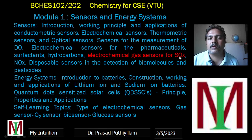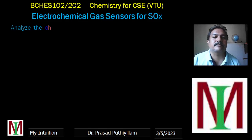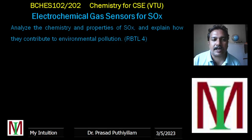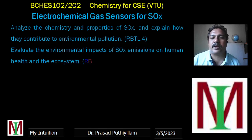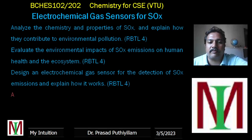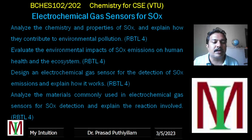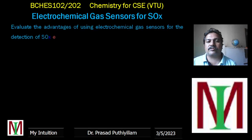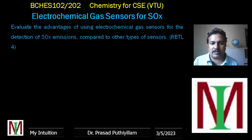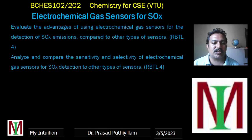The previous class video covered only the electrochemical gas sensor, and now this is only for the electrochemical gas sensor for SOX. For detecting SOX, here are some level four questions: analyze the chemistry and properties of SOX and explain how they contribute to environmental pollution; evaluate the environmental impacts of SOX emissions on human health and ecosystems; design an electrochemical gas sensor for the detection of SOX emissions and explain how it works; analyze the materials commonly used in electrochemical gas sensors for SOX detection and explain the reactions involved; analyze and compare the sensitivity and selectivity of electrochemical gas sensors for SOX detection to other types of sensors.